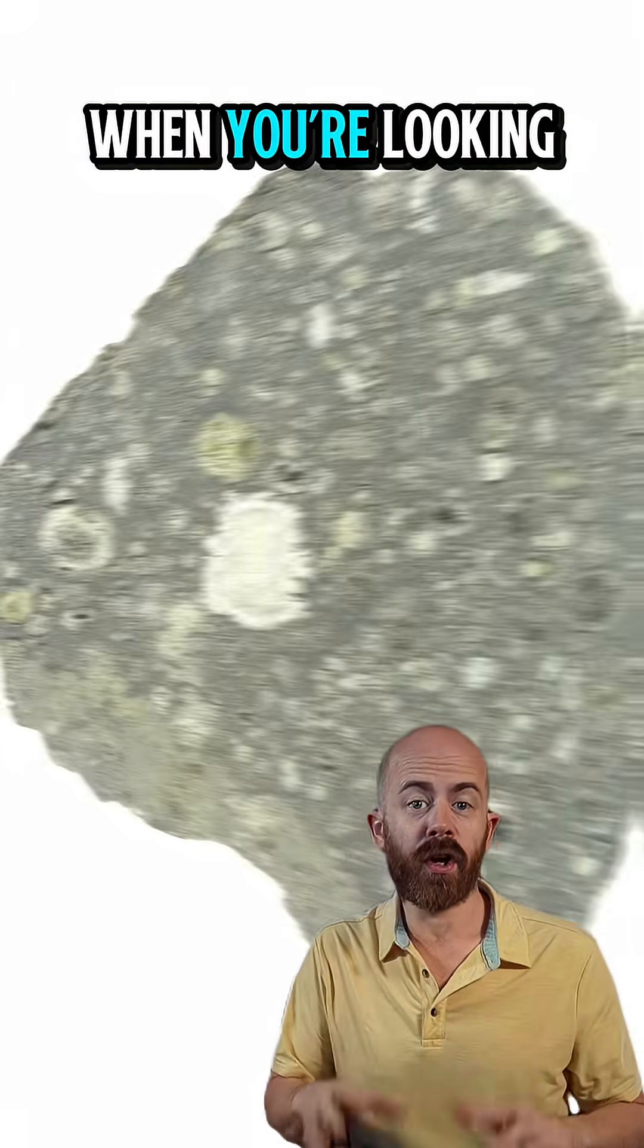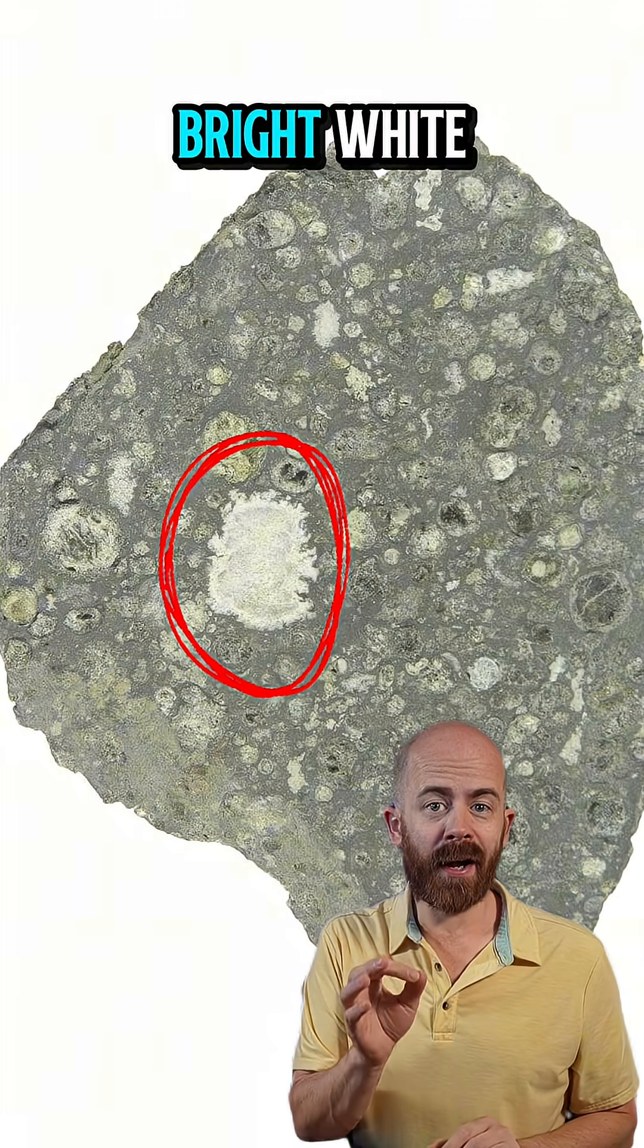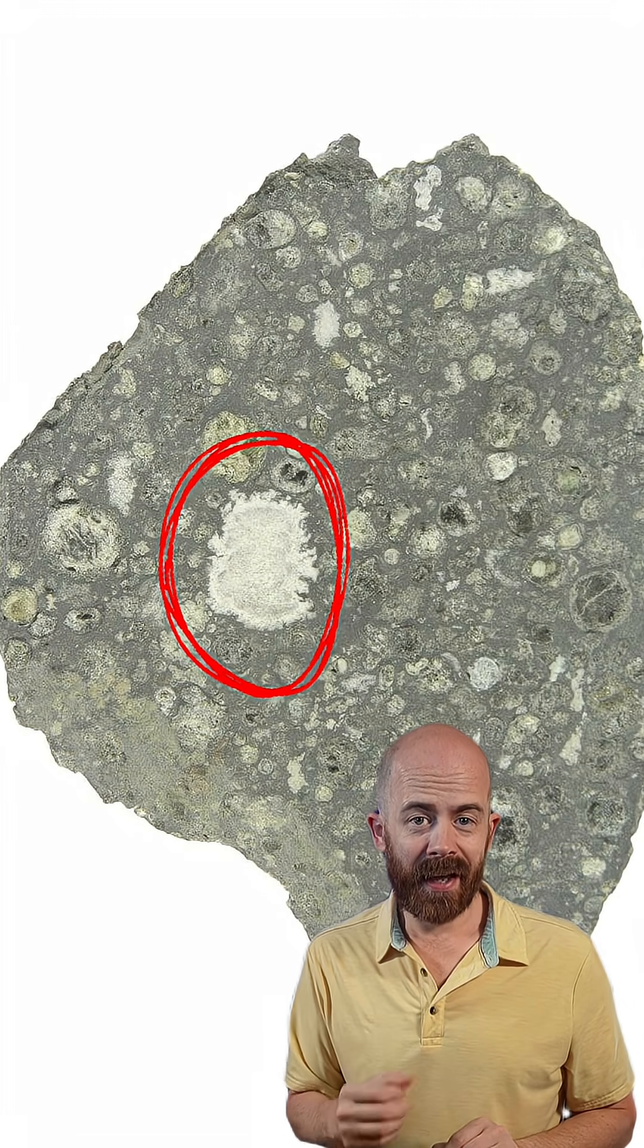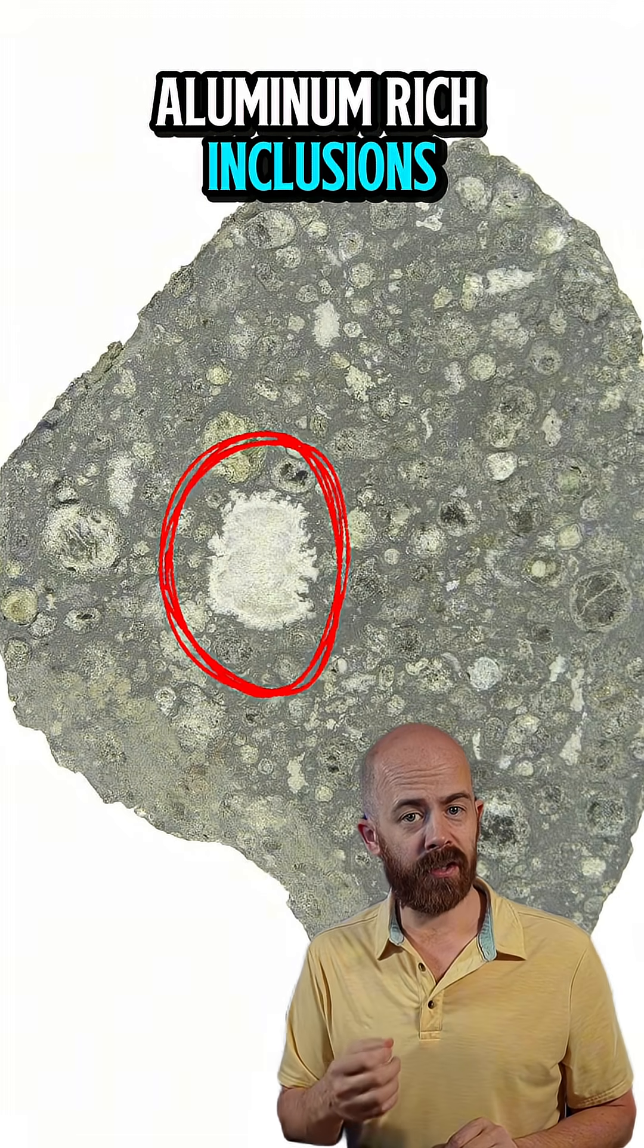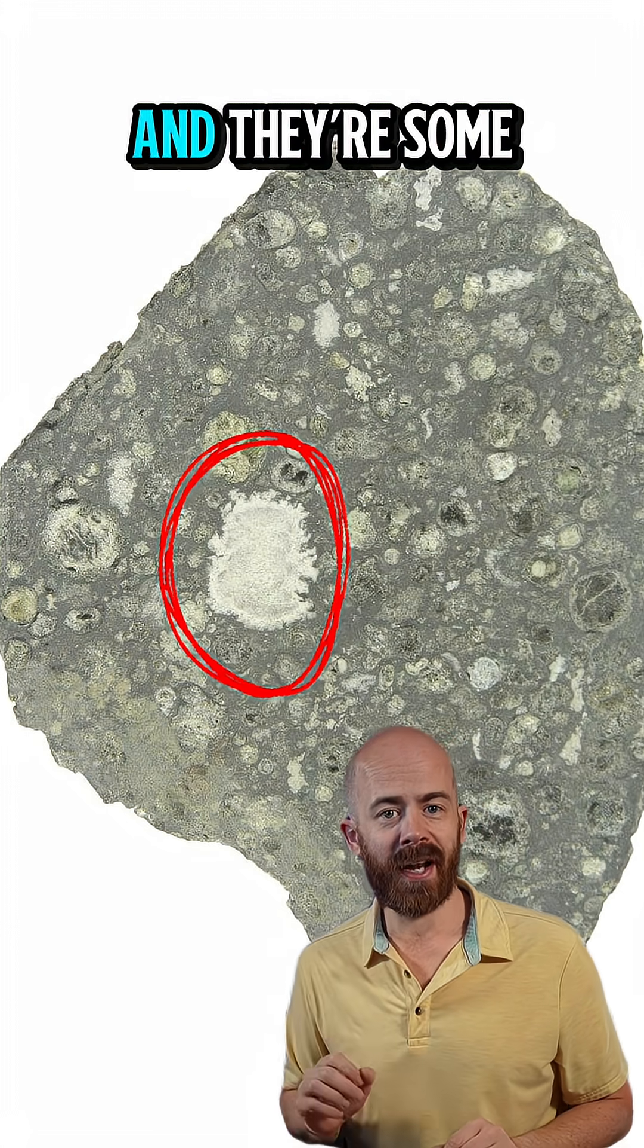Hidden inside some meteorites are time capsules from the birth of the sun. I have some of those here, so let's take a closer look. When you're looking at certain meteorites, you might spot bright white-gray irregular shapes. These are calcium-aluminum-rich inclusions, or CAIs for short,